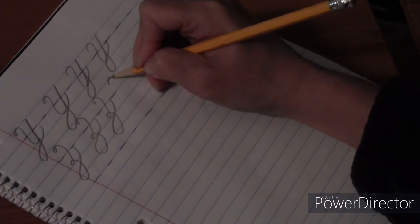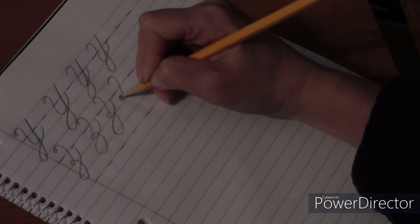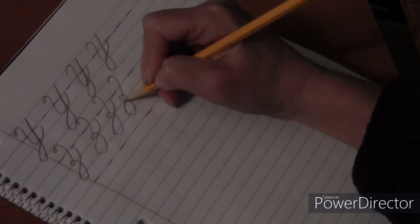Remember if you can't get those loops in at the top, that's okay. You can curve it like that and it's still a letter Z. Okay, go ahead and make five. Try your best. Do it as neat as you can. If they're not perfect, don't worry.